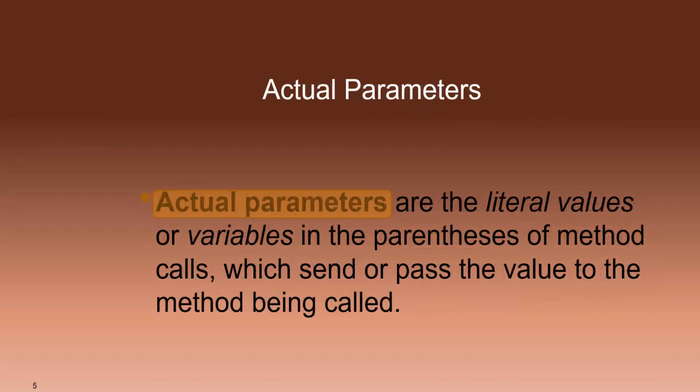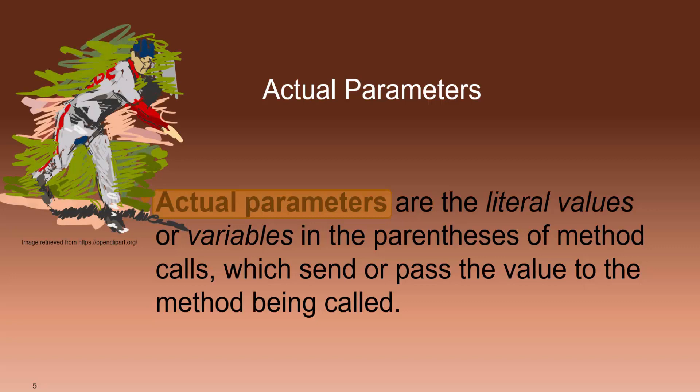The actual parameter is a variable located in the parameter list of a method call, the one that passes the information to the method, like a person throwing a ball to another person.